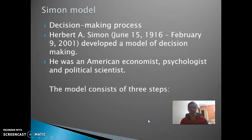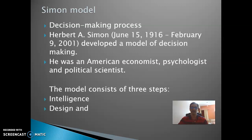The model consists of three steps or three phases. The first phase is Intelligence, the second is Design, and the third is Choice. Intelligence, Design, and Choice are the three steps in the Simon Model.